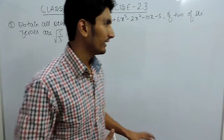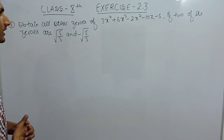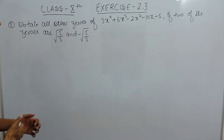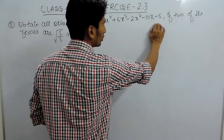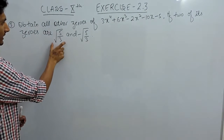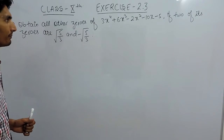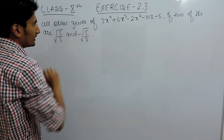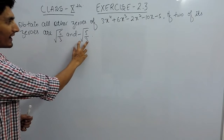Hello everyone. In this video we are going to solve question number 3 of exercise 2.3. In this question we have to obtain all other zeros of a particular polynomial if two of its zeros are given as √(5/3) and -√(5/3). We know that zeros are basically the values of x.